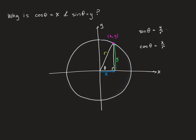Now, if I multiply both sides of this equation by r, and I multiply both sides of this equation by r, I get the following: x equals r cosine theta, and y equals r sine theta.